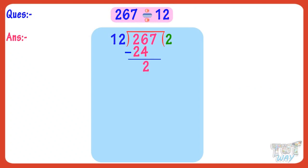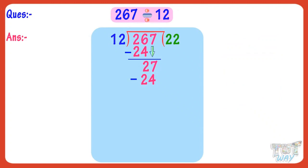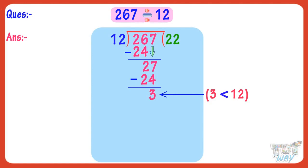Now the digit left in the dividend to be divided is 7. Bring it down. Now we have to divide 27 by 12. The nearest multiple of 12 is 24. 12 multiplied by 2 equals 24. So write 2 to the right of the quotient and 24 below 27. Subtract 24 from 27, and on subtracting we get 3. Now 3 is less than the divisor, which is 12. If we do not have to find the quotient in decimals, our answer is 22 and 3 is our remainder.